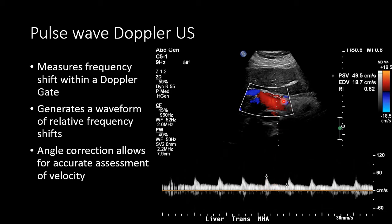When we angle correct for the direction of flow relative to our ultrasound beam, we can then generate velocity measurements that are accurate when angle correction is accurate.